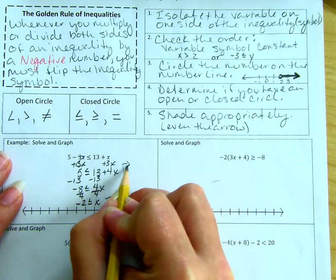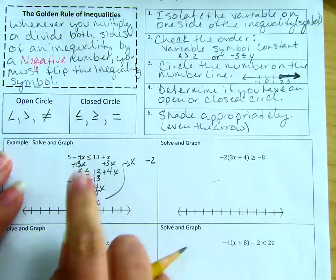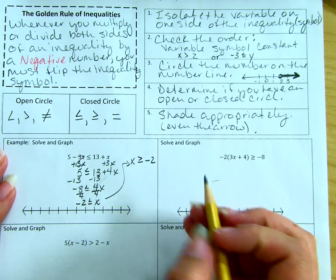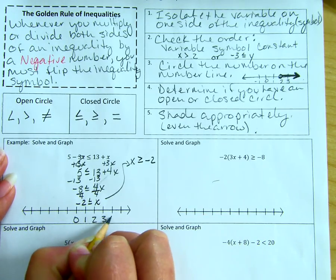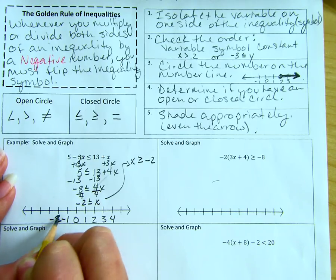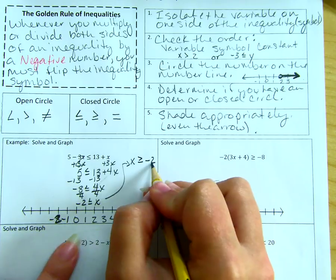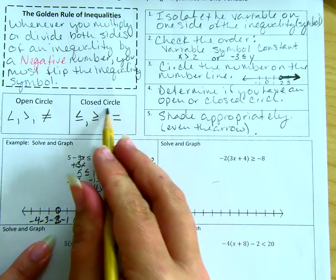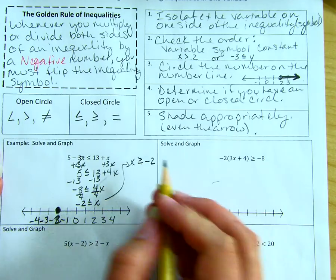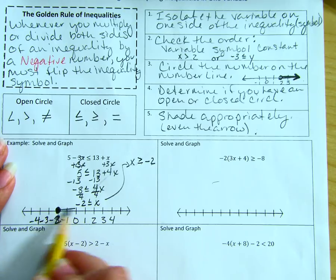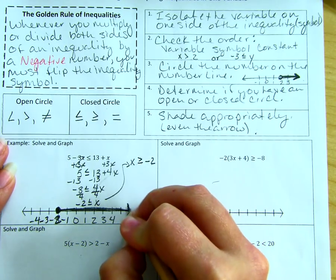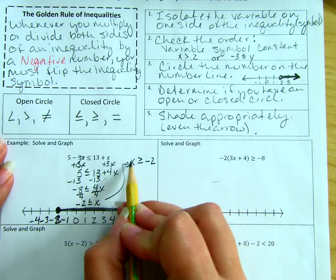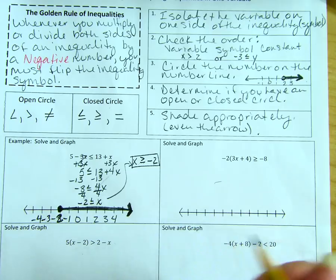I can rewrite this with x on the left — x is greater than or equal to negative two — flipping the sign when I flip sides. I'll number my number line starting at zero, showing values on either side. I go to negative two, circle that value, and since it says greater than or equal to, I fill in a closed circle. Then I shade toward all values greater than negative two, including the arrow.